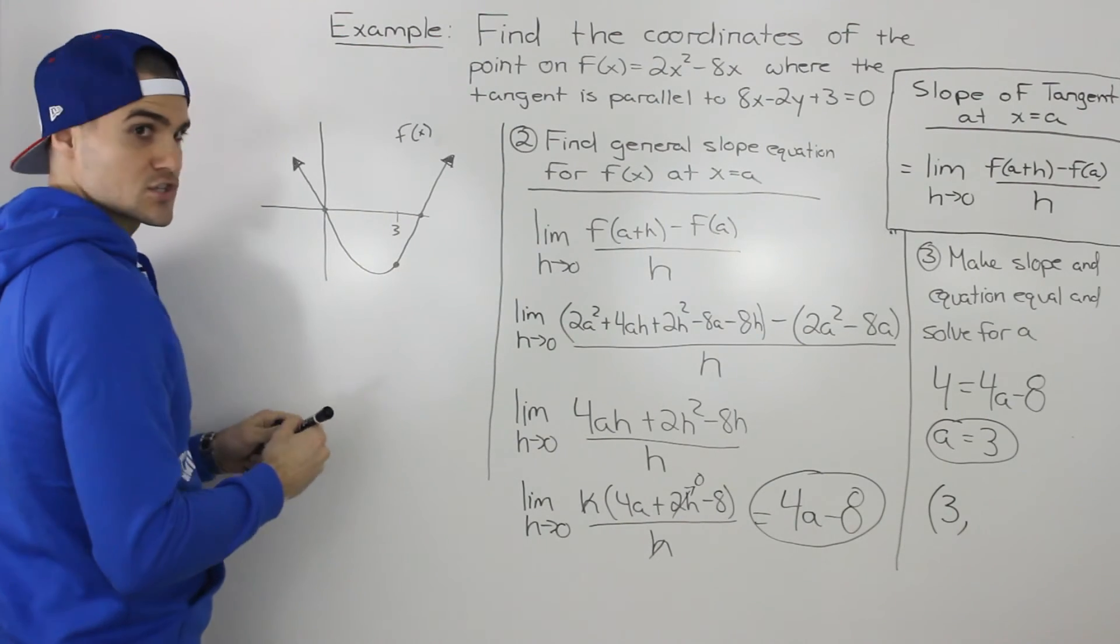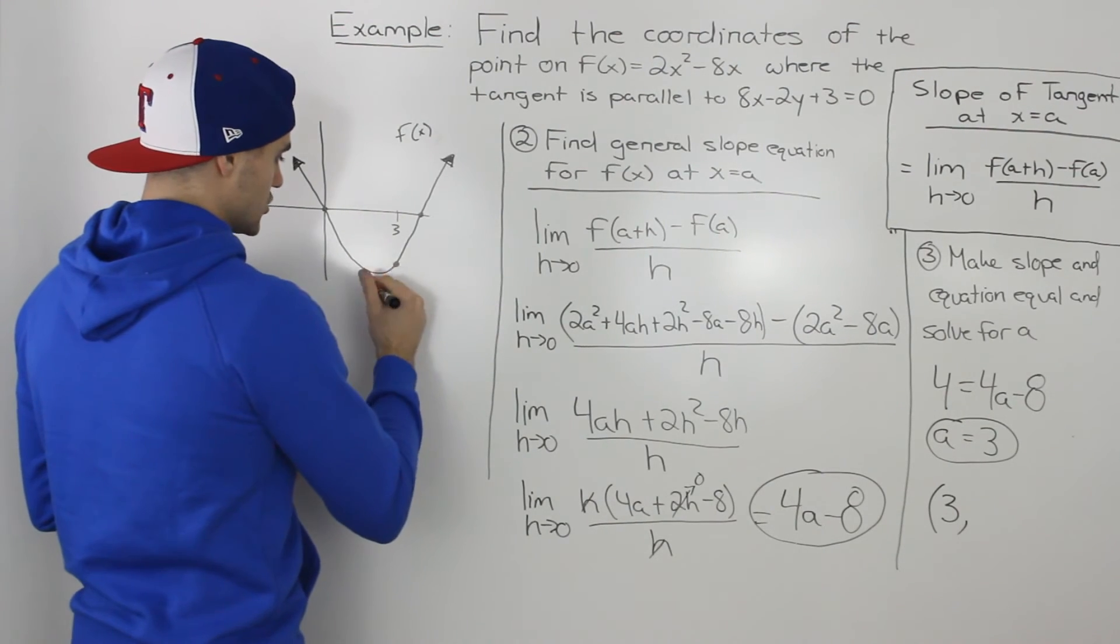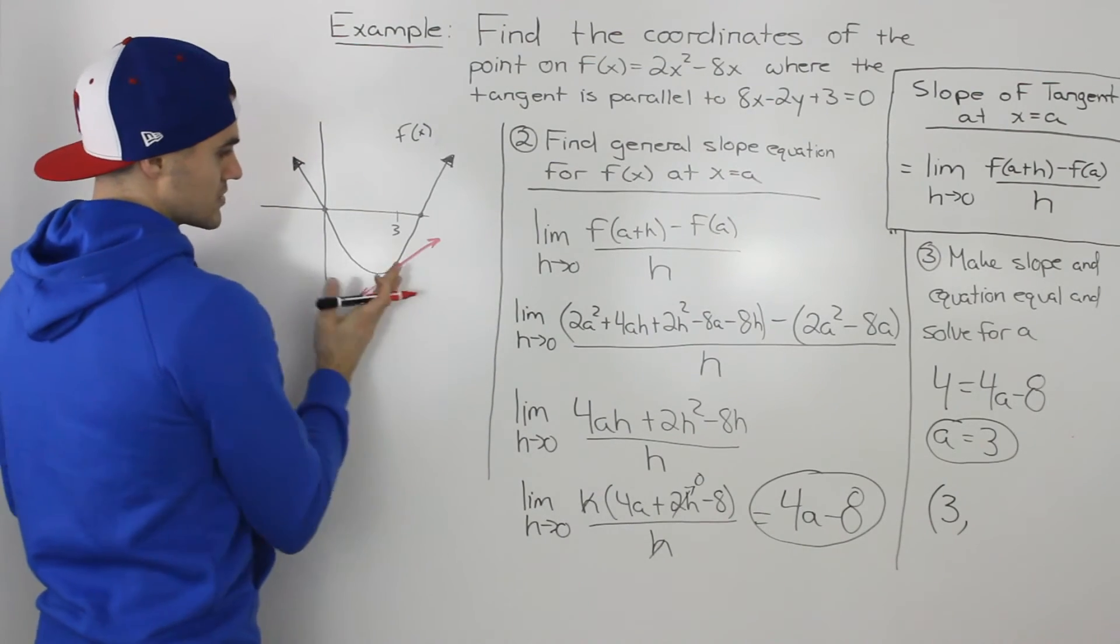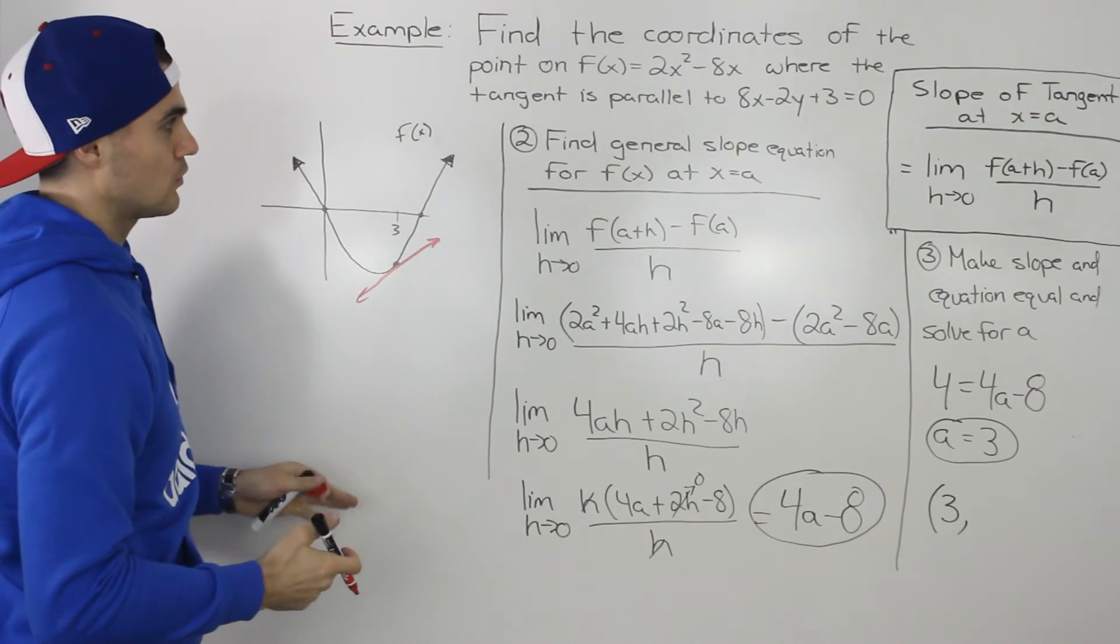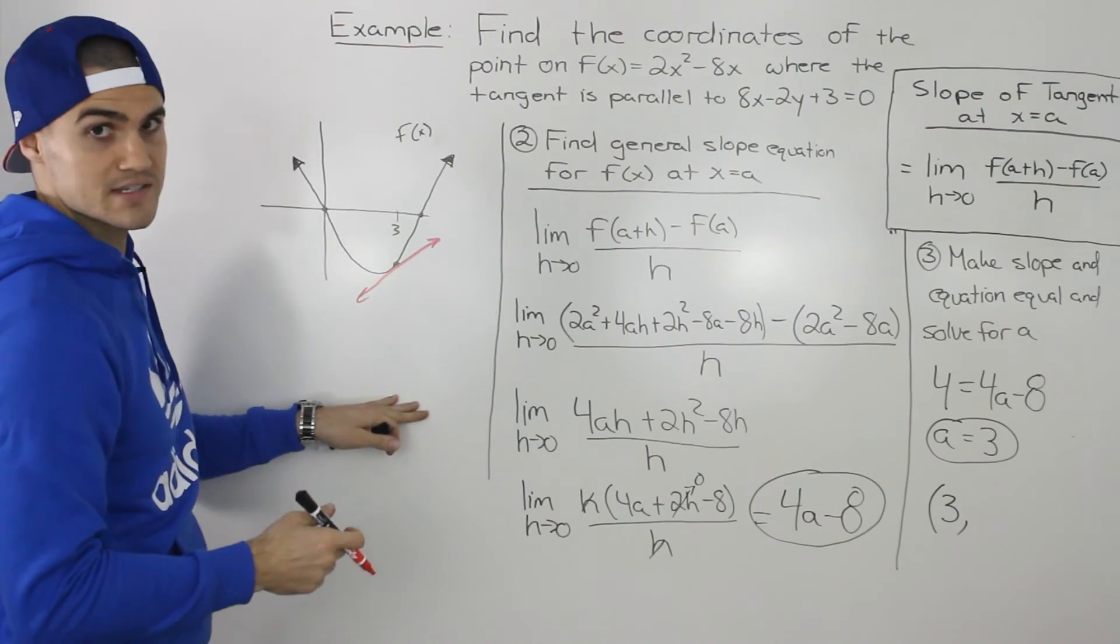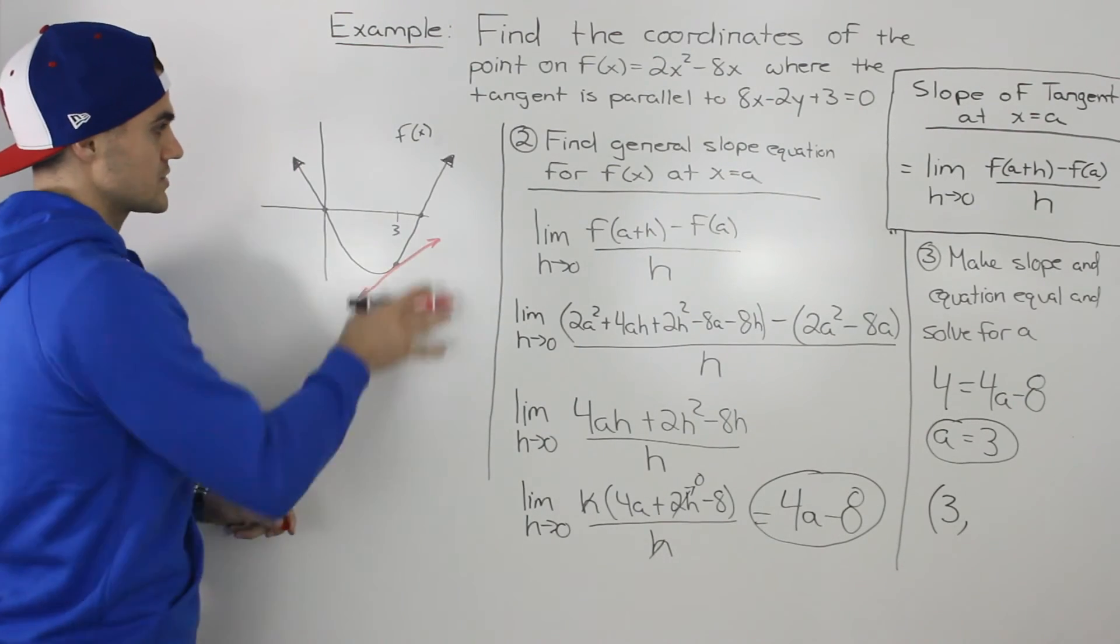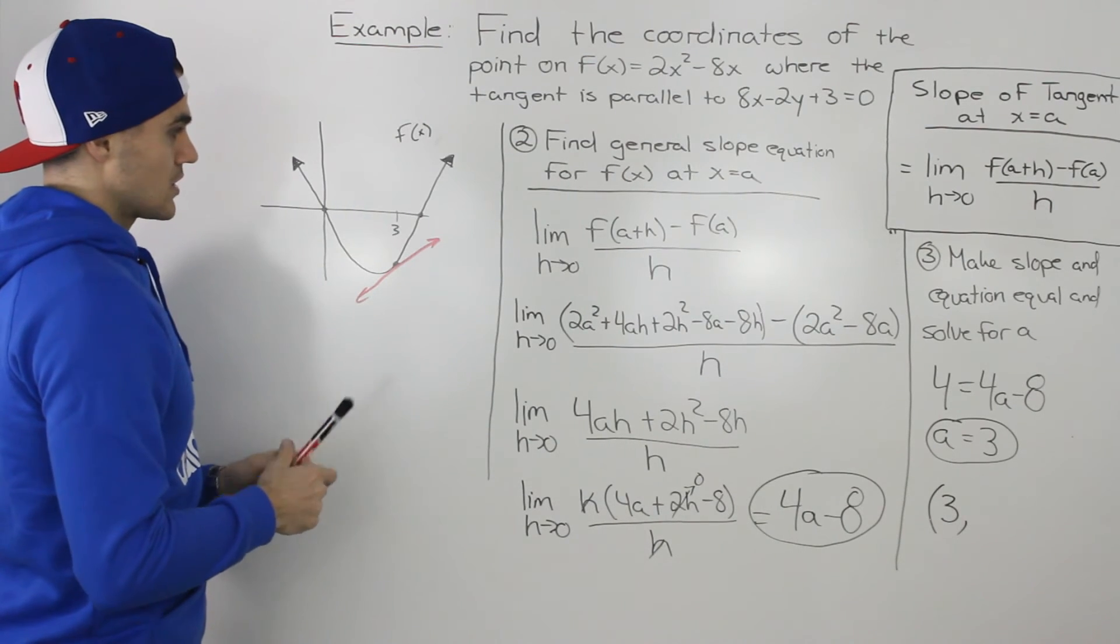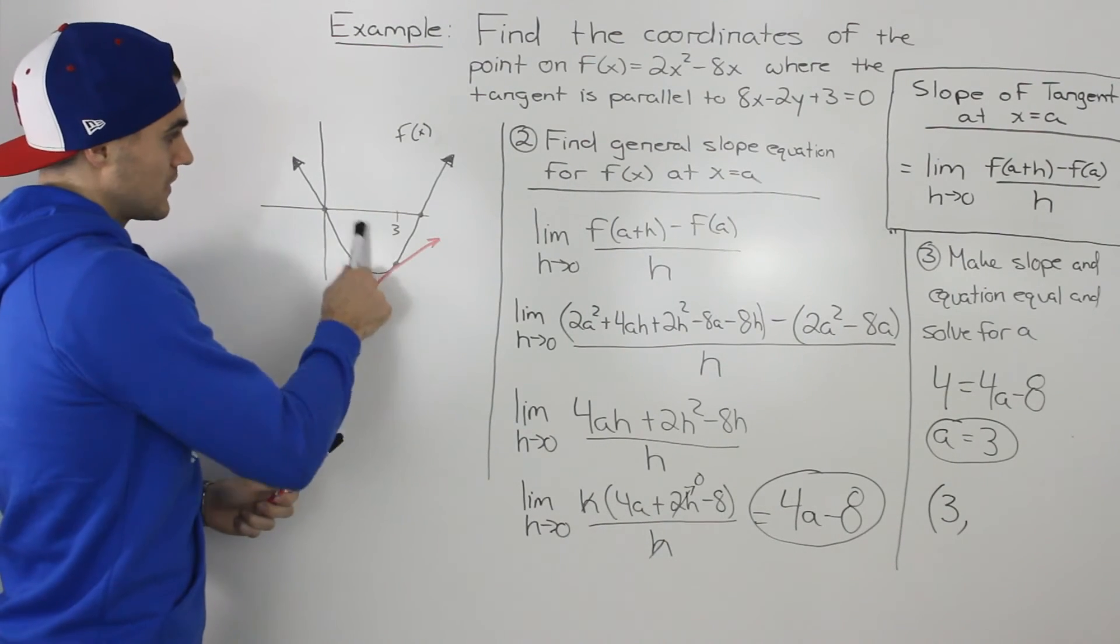on the function, the slope of that tangent, so if we draw a tangent in red here, the slope of this tangent is going to equal 4, which is what we found in step 1. I erased step 1 here just to give myself more room for this diagram.